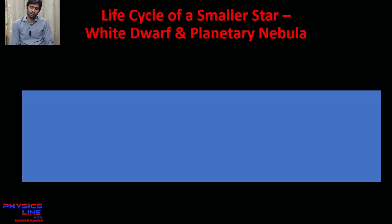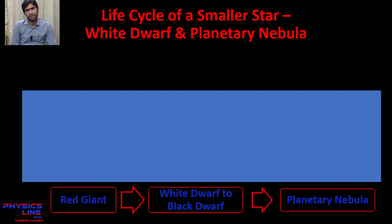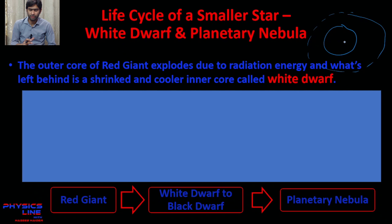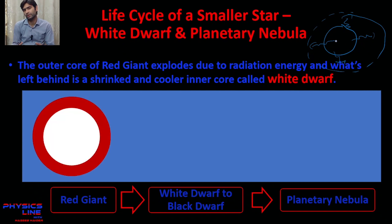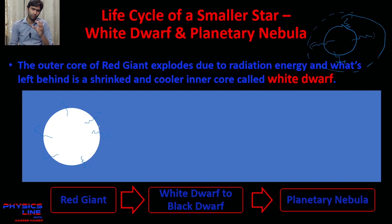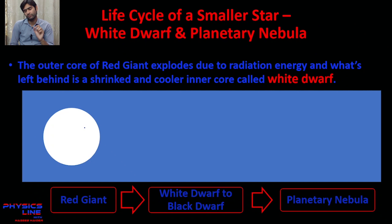The red giant will then transform into a white dwarf. The main nuclear fusion reaction occurs at the core where hydrogen nuclei are fused and thermal energy is produced. Since the red giant stage is deficient in hydrogen nuclei, there is less fuel available, and no more thermal energy is generated. The residual thermal energy keeps moving outwards, causing the outer core to explode.